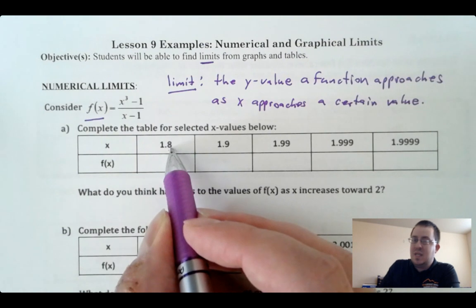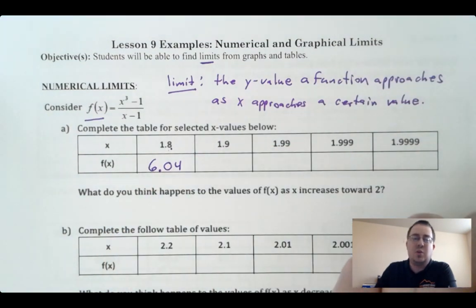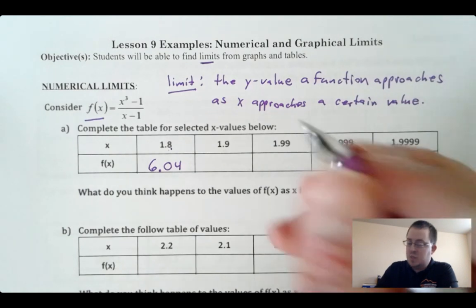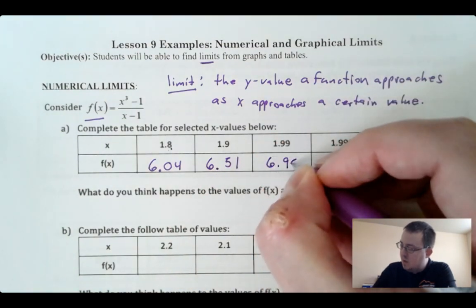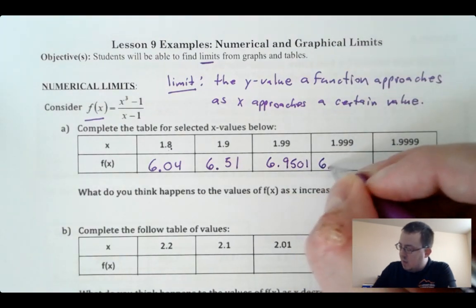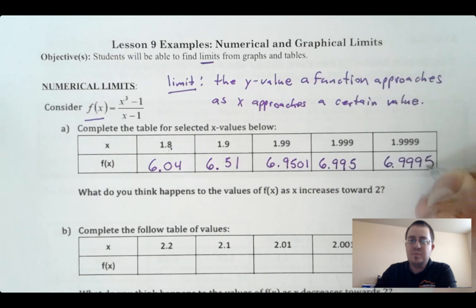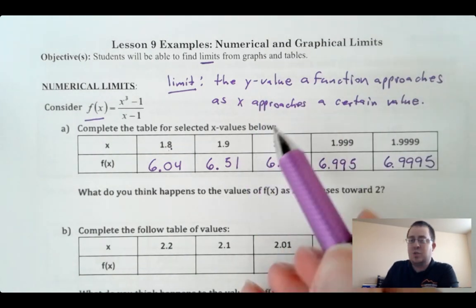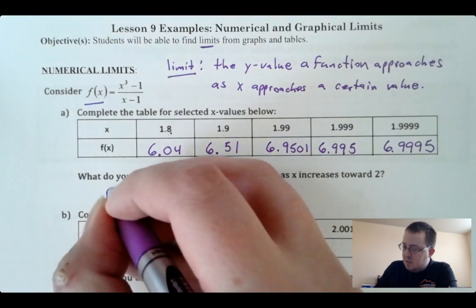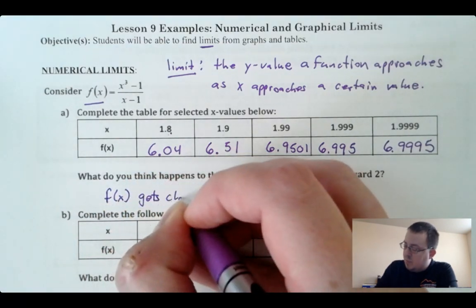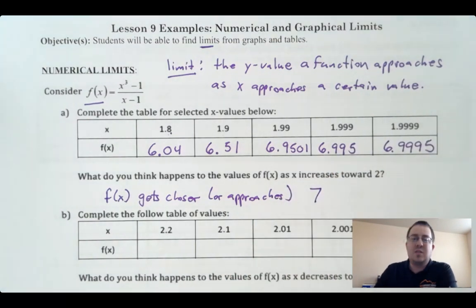If I plug in 1.8 into this function, you should get 6.04. You can check these in your calculators, especially with the cubing and division. For 1.9 you get 6.51, 1.99 gives 6.9501, 1.999 is about 6.995, and 1.9999 is 6.99995. So what is the y value approaching as x gets close to 2? Well, f of x gets closer to 7.